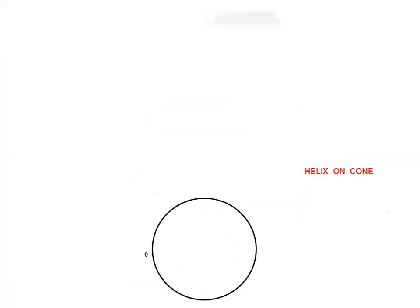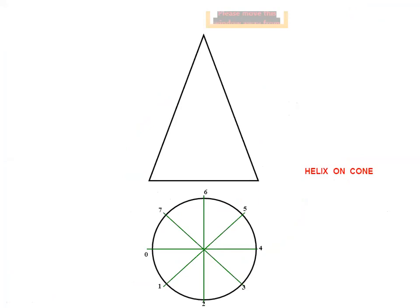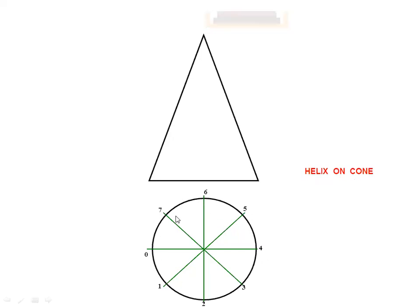Next topic is helix on a cone. You are aware what exactly a cone is — you have seen the cone of ice cream or birthday caps. Now we have to draw a helix which is on a cone, and then we will see helix on a cylinder. For that, the input we are going to have is the radius or diameter of the cone, and the axis height of the cone. By taking this input, we will draw the base, and we will draw the slant edges.